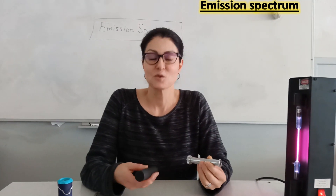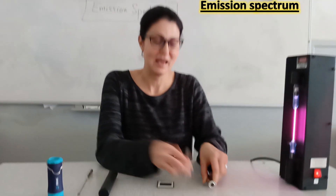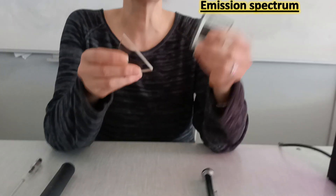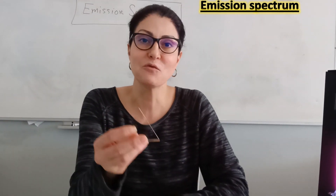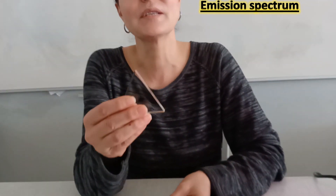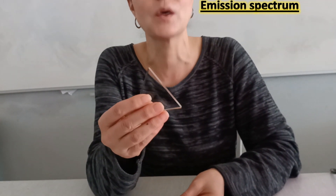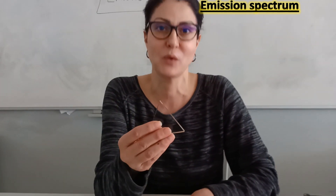A simple spectroscope is an optical apparatus that uses a dispersing system like a prism or a diffraction grating in order to separate light to observe the monochromatic lights forming it. When light falls on a prism, it undergoes refraction, so light is dispersed or separated into its constituent wavelengths.